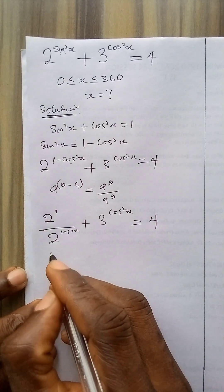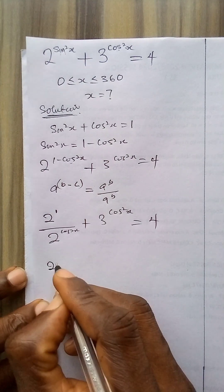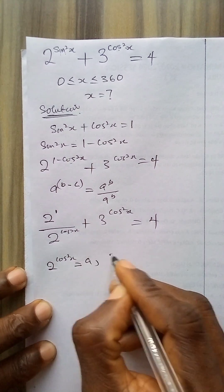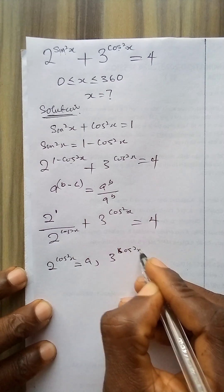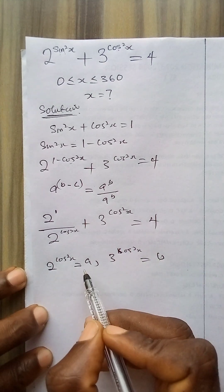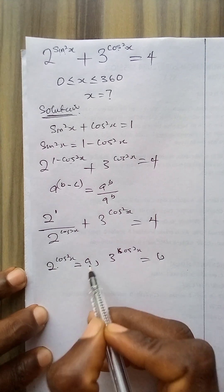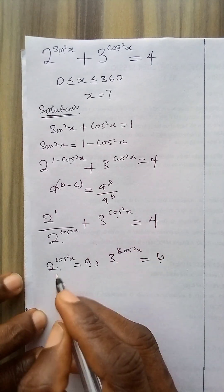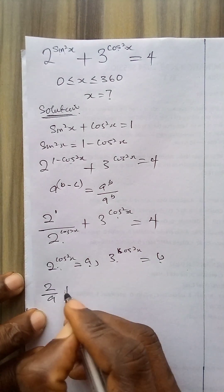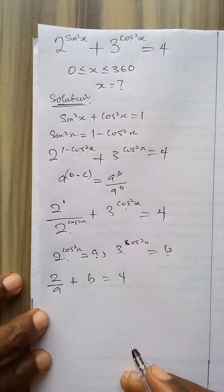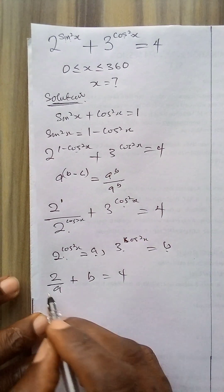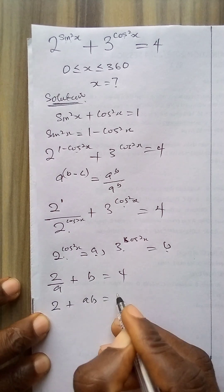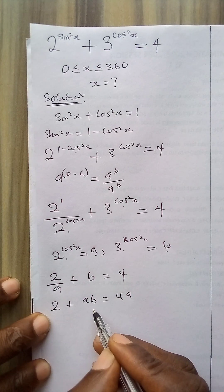Now I am going to make one substitution: let 2 to the power cos squared x equal a, and 3 to the power cos squared x equal b. Substituting, it becomes 2 over a plus b is equal to 4. If I multiply through by a to clear the fraction, I get 2 plus ab is equal to 4a.